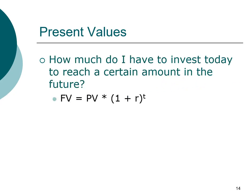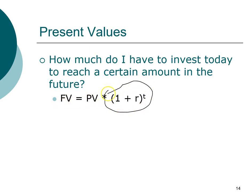The present value formula is actually derived from the future value formula. This is our general future value formula, and all we have to do is rearrange it to get our present value. We divide both sides — cross multiply — so this factor becomes the denominator. The present value is equal to the future value divided by the interest factor.